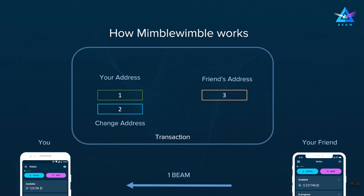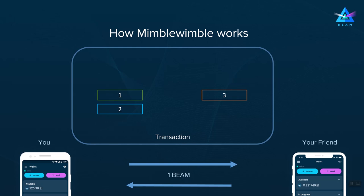So now let's see what makes MimbleWimble different. First of all, both wallets need to communicate with one another in order to create a transaction. Second, being a confidential protocol, no addresses are recorded and all amounts are encrypted and can only be seen by the owners of these UTXOs.